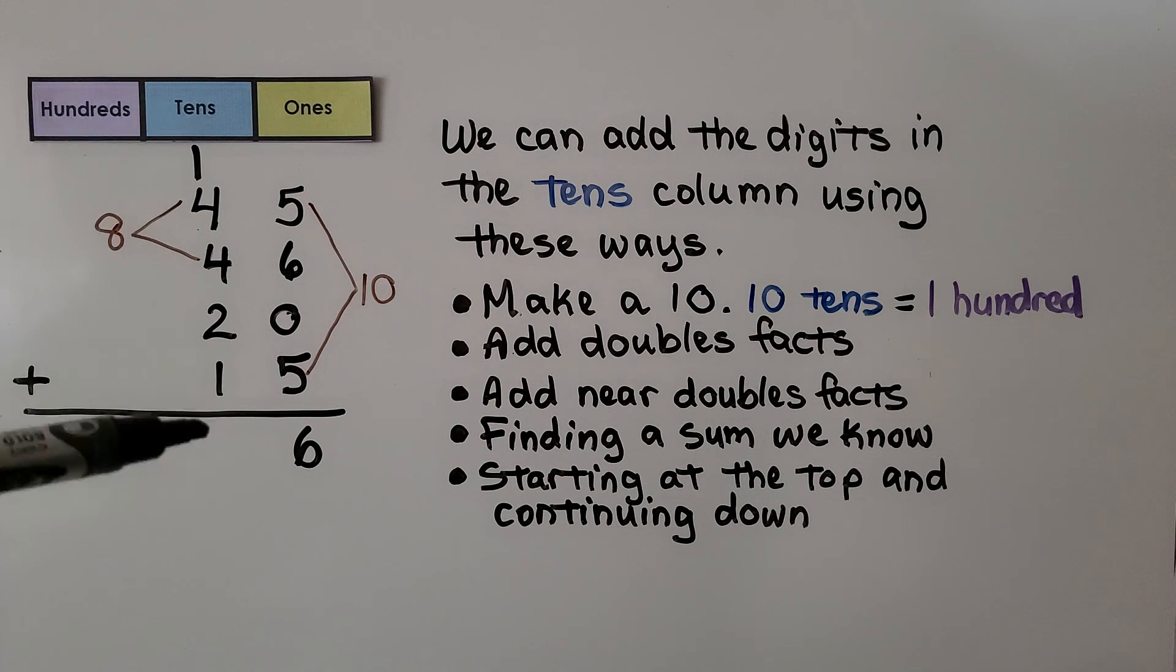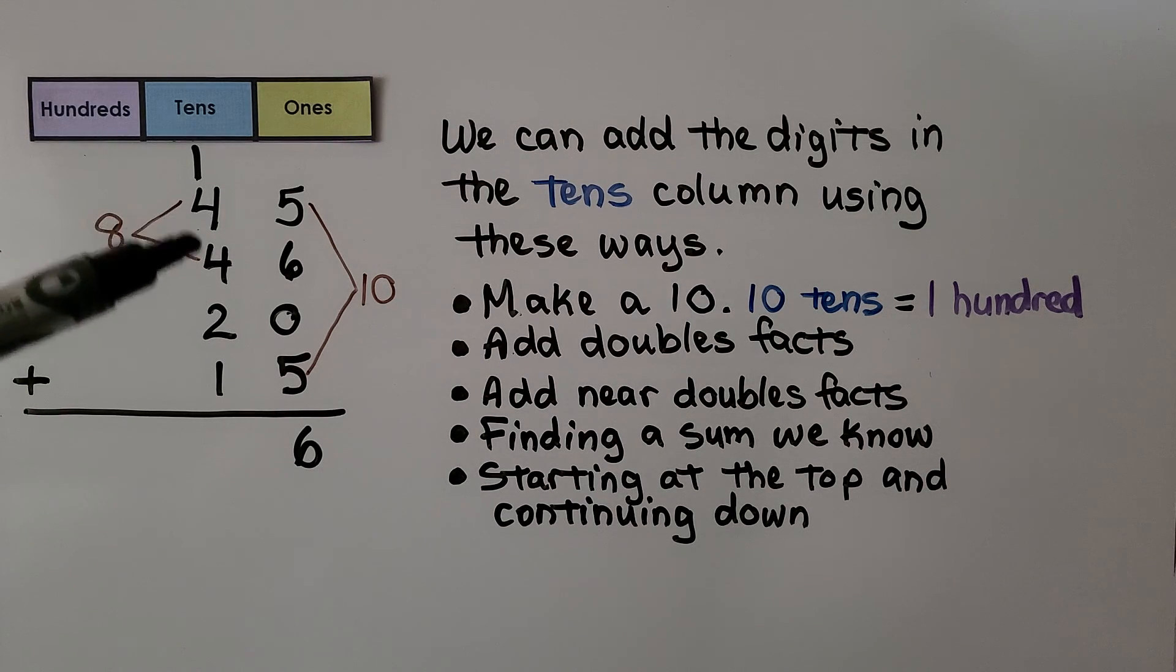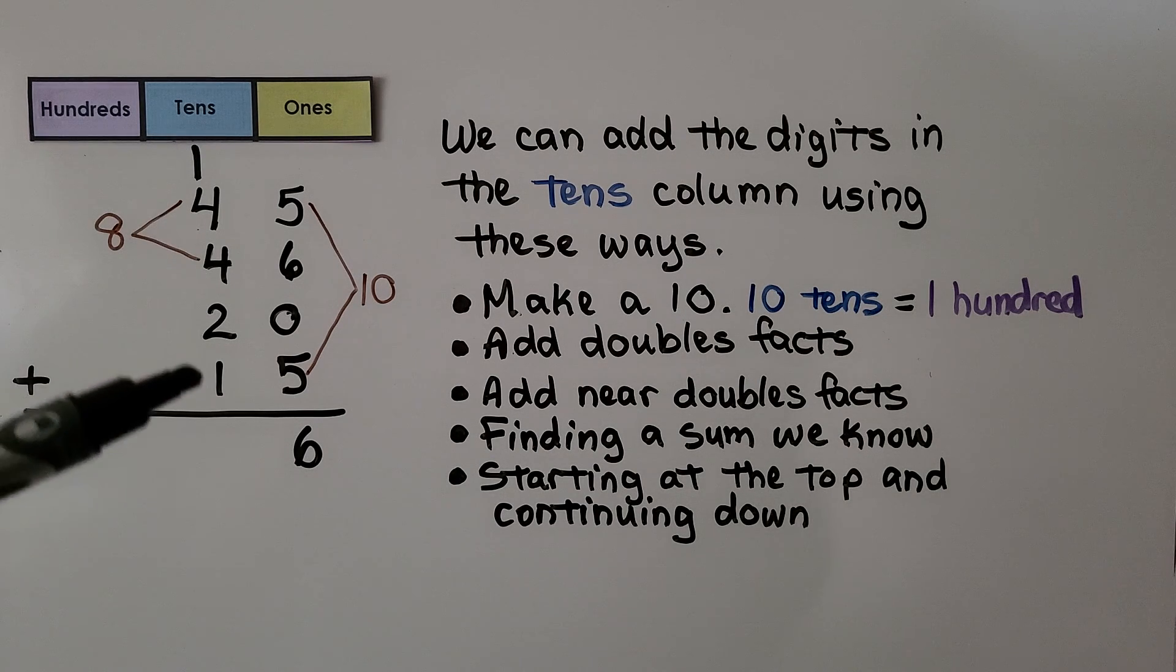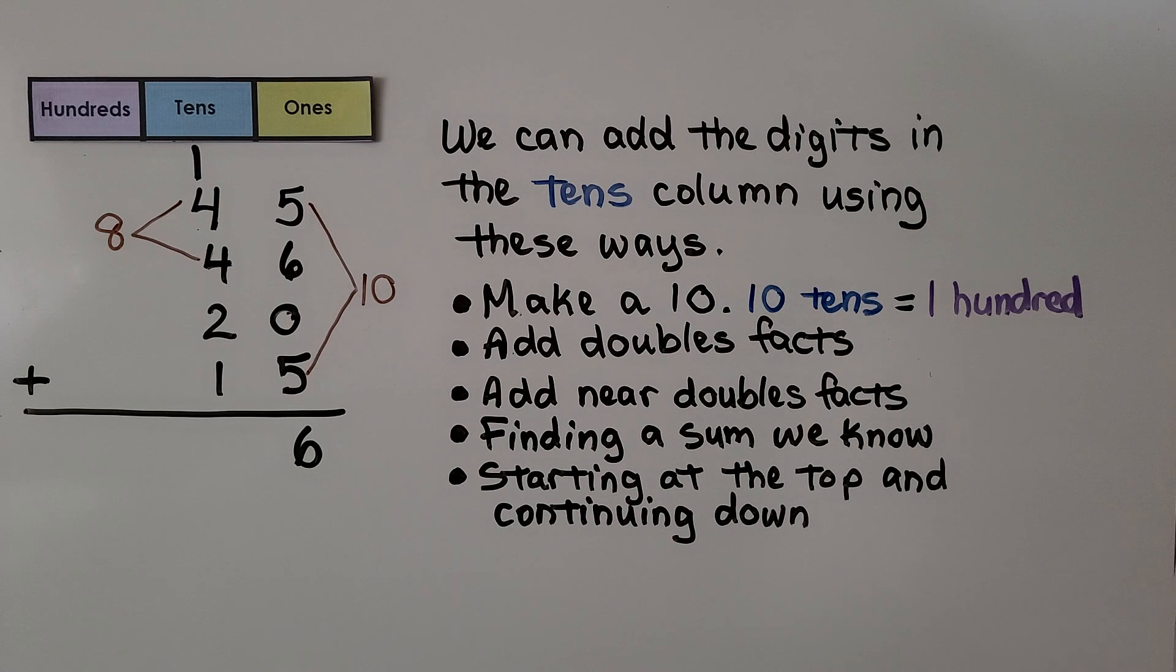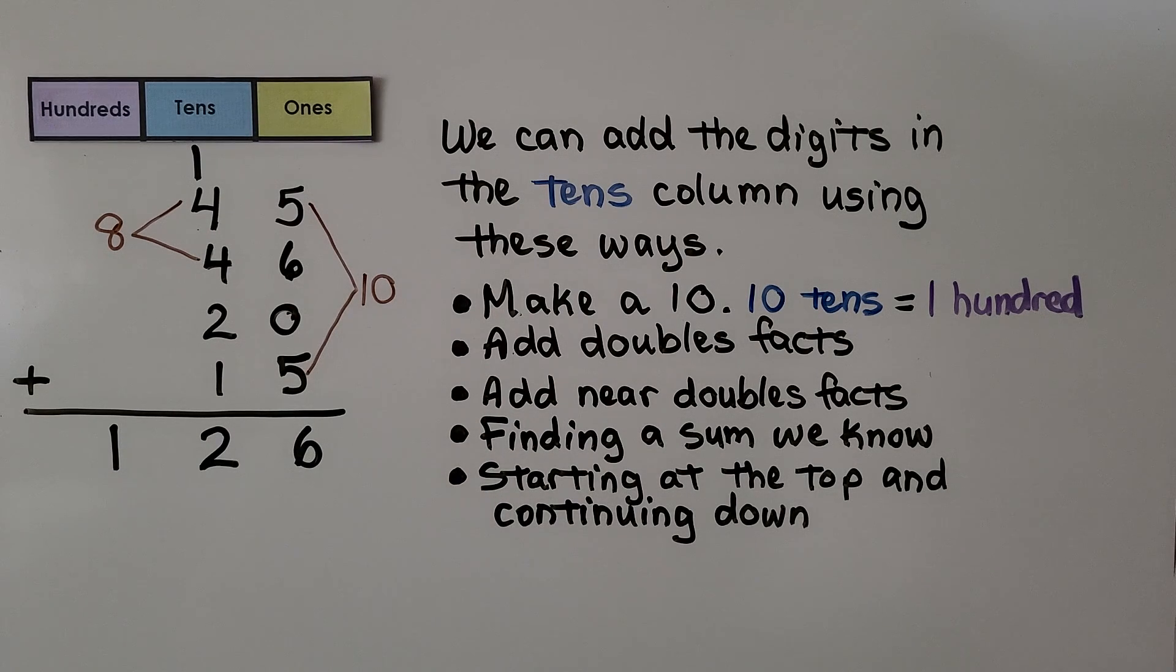If we had started adding the tens place, we would have forgotten about this regrouped 1 and we would have had to add again. Now we have 4 plus 4 is 8, plus 2 more is 10, 11, 12. We have 12 tens, and 12 tens are 10 tens which make 100 with 2 tens left over. That's 120, and we have 6 ones, 126.